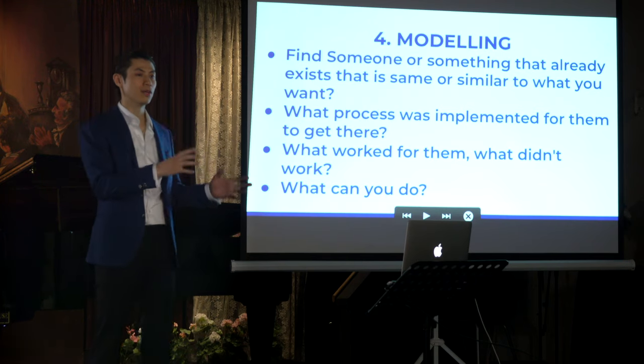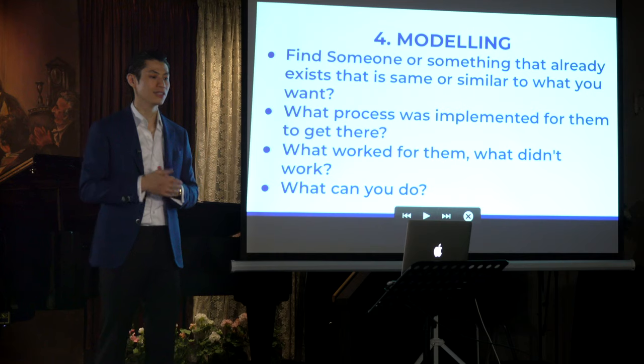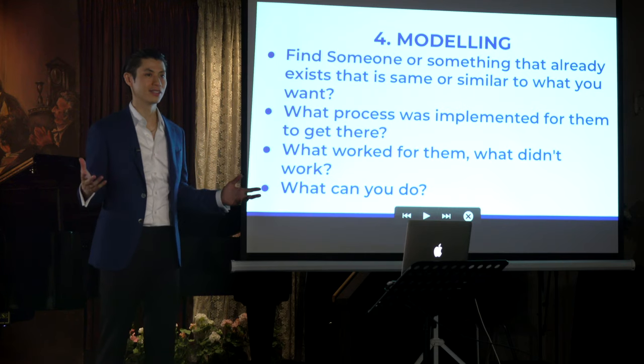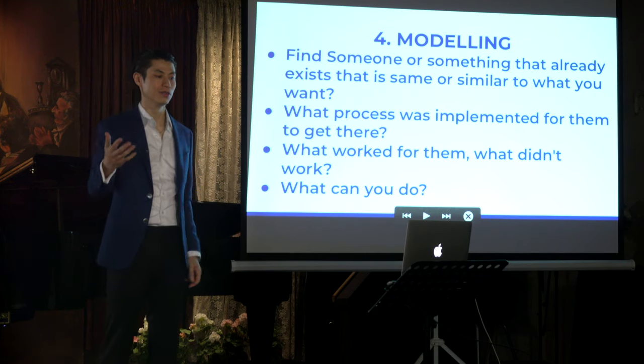Go to somebody, or find someone or something that already exists that is very similar to what you want. Does it exist? Let's say you want to buy a new house. Did somebody else buy a house like that? What process was implemented for them to get there? What can you do and what can you not do? Let's say somebody got the house, but they won the lottery. Can you do that? No.